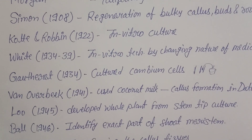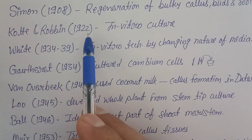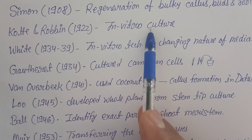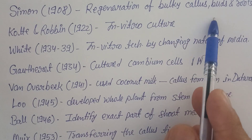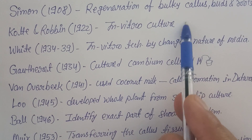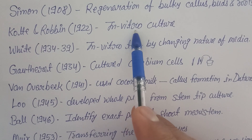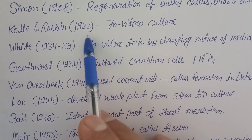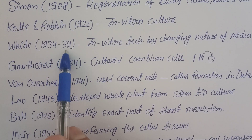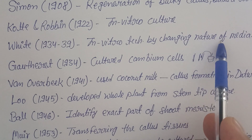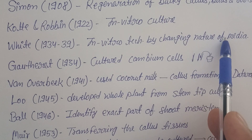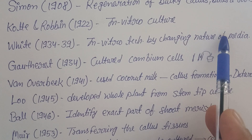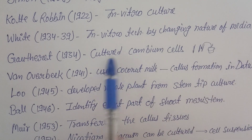Knop and Robin in 1922 told about in vitro culture — growing the plant not in an open field or nursery, but in a laboratory using test tubes, beakers, conical flasks, and other glassware, providing nutrients, plant growth hormones, and so on. Later, White from 1934 to 1939 told about in vitro technique by changing the nature of the media — microelements, inorganic supplements, plant growth regulators, carbon source, and nitrogen source — showing that changes in media composition also change growth.